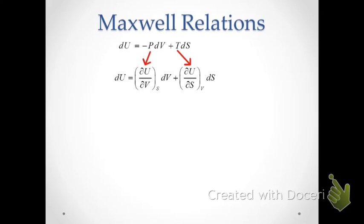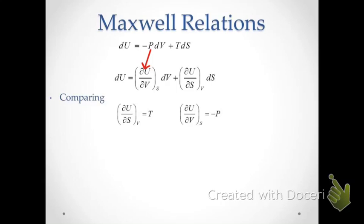Comparing these two equations, we can clearly identify specific properties associated with these partial derivatives. We can see that dU/dV at constant S is equal to negative P, and dU/dS at constant V is equal to T, as shown through this comparison.